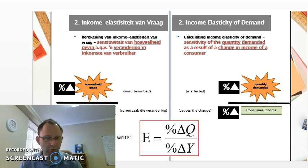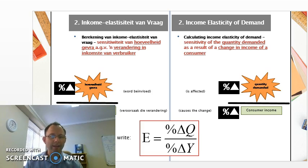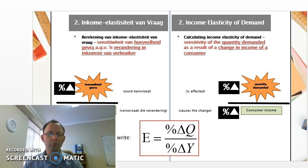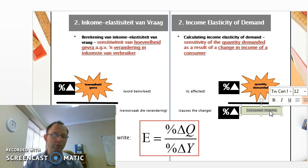Income elasticity of demand has to do with a change in consumers' income. What is the percentage change in the quantity demanded as a result of a change in a consumer's income? As consumers' income changes, they decide to either buy more or buy less, and the size of this influence is calculated through the elasticity — it's the percentage change in quantity demanded as a result of a percentage change in consumers' income.